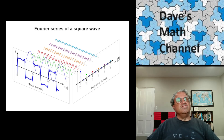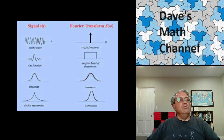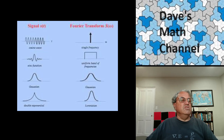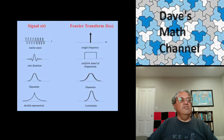A Fourier series is really just a special case of a Fourier transform where you get delta functions. Now I want to talk about Fourier transforms. The nice thing about Fourier transforms is you don't have to start with a periodic function — you only have to do that for Fourier series. You can start with any function, pretty much, as long as it satisfies some conditions. It has to be compact — it can't go on to infinity, it has to have a finite area under it.